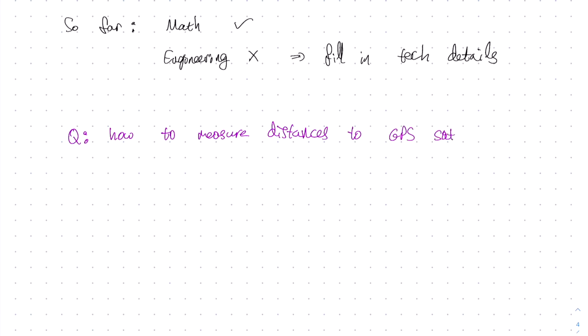Our discussion thus far has been very precise and correct from the standpoint of mathematics. On the other hand, from the standpoint of engineering, you can't really make the GPS system work as described. So let's go ahead and fill in the technical details. The very first question to ask is how are we going to measure the distances to the GPS satellites? The answer to this question is that we are going to use time of flight. And this is true for all satellite-based global positioning systems, including the Russian one GLONASS, and the European one GALILEO, not just the American GPS system.